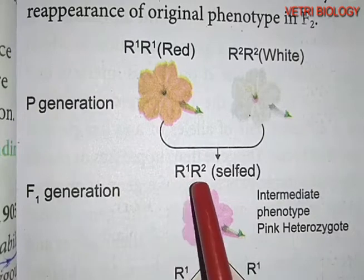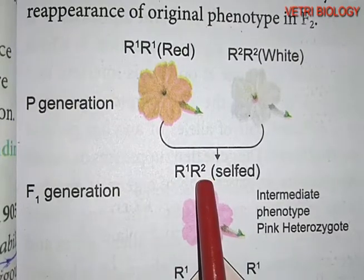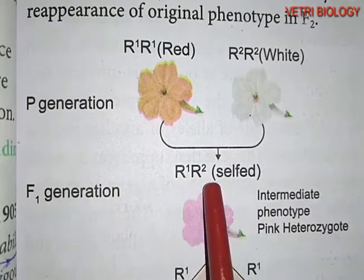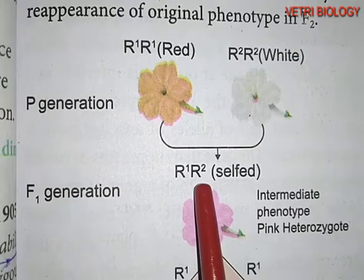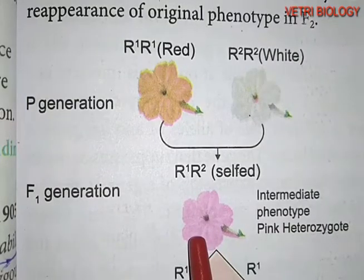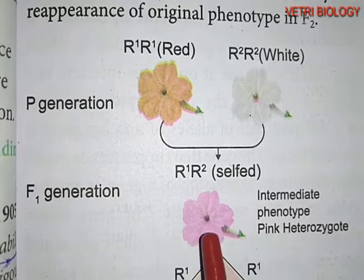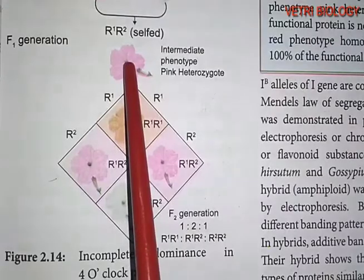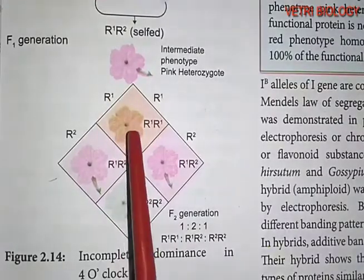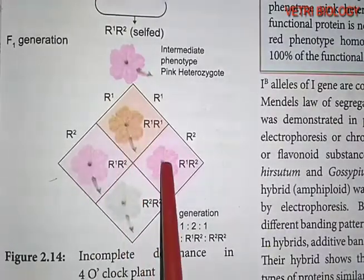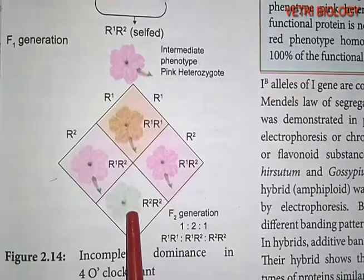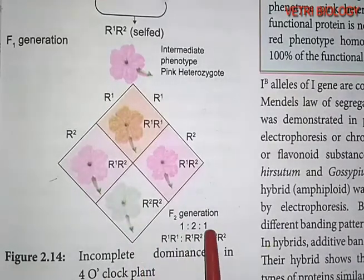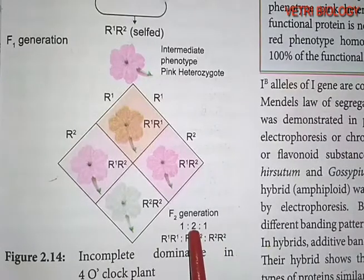One allele is not completely dominant over the other allele — neither the red allele dominates nor the white allele dominates. It shows incomplete dominance. Such allelic interaction is called intermediate dominance. When F1 pink colored flowers are self-pollinated, in the F2 generation we get red, pink, and white color flowers with a phenotypic ratio of 1:2:1. The genotypic ratio is also 1:2:1.